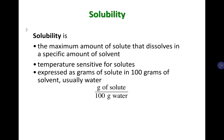Let's first talk about the definition for solubility. Solubility is defined as the maximum amount of solute that dissolves in a specific amount of solvent. Two things are important in this definition: you have to have a fixed or specific amount of solvent, and the solute should be the maximum amount that you can dissolve in the solvent.